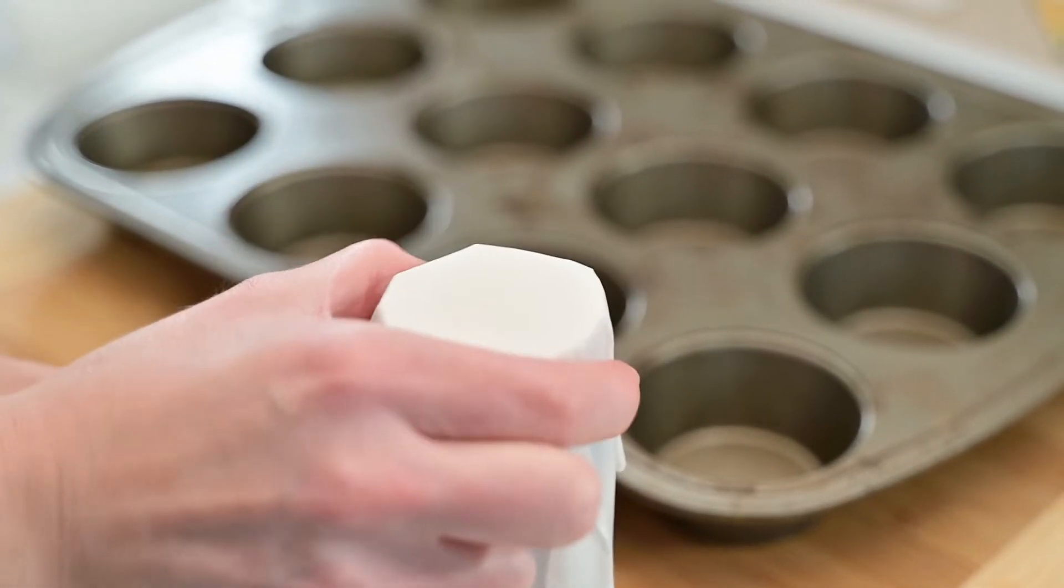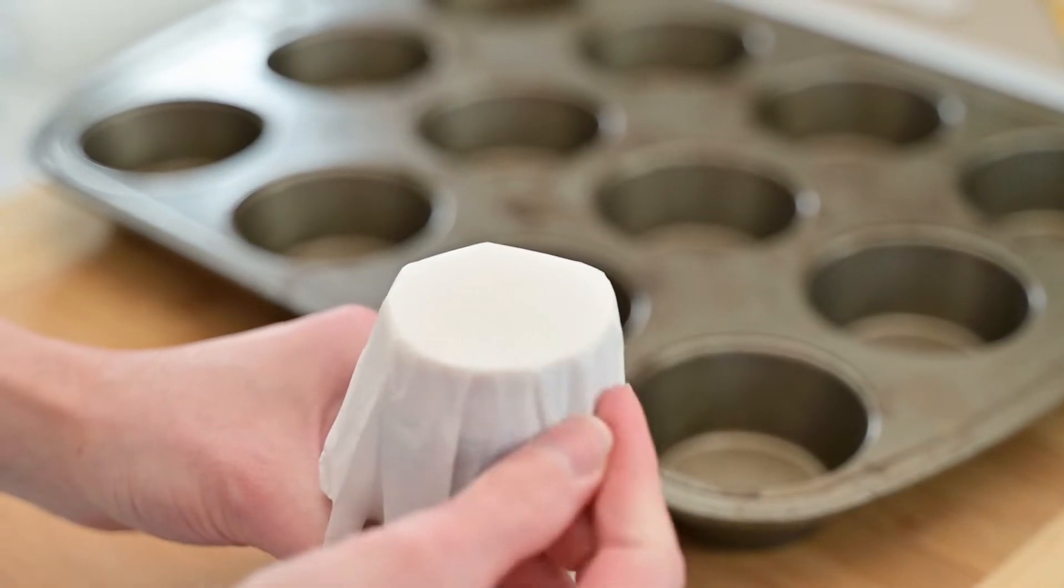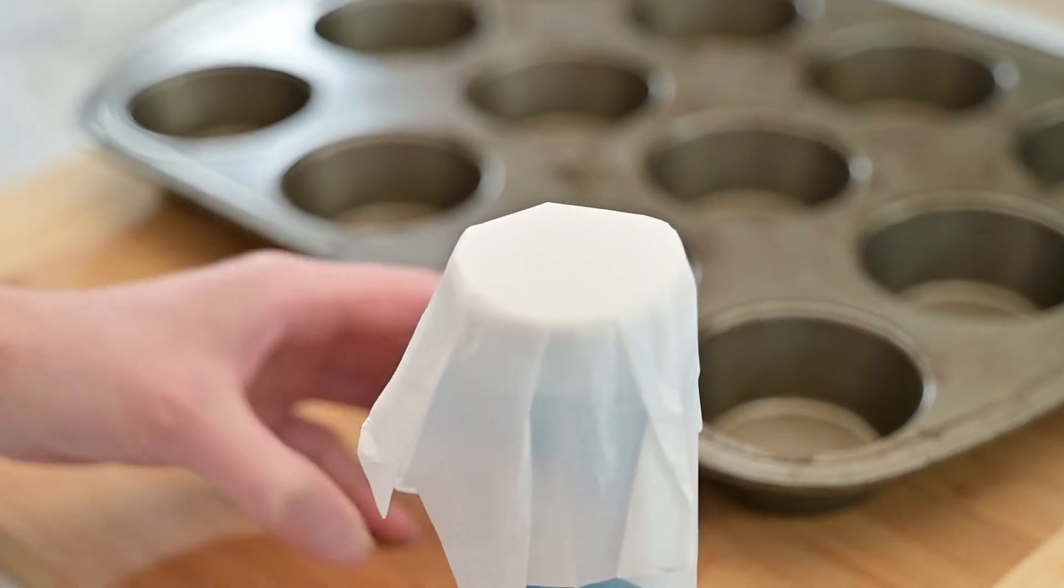You can also use a rubber band to help hold the parchment paper on the jar or bottle while you work on folding the creases.